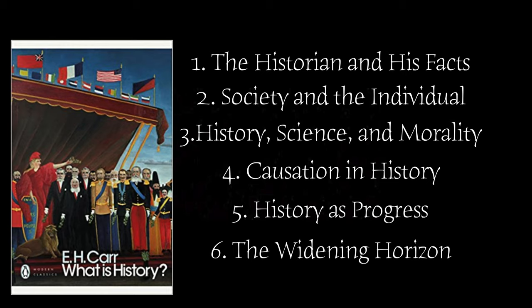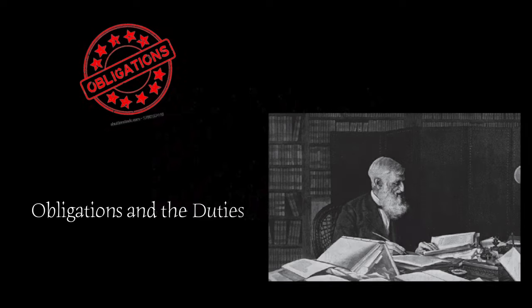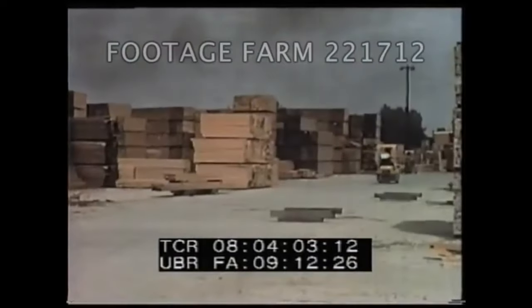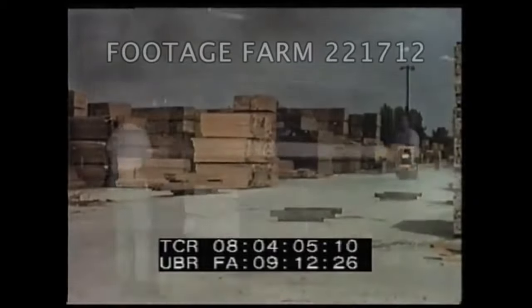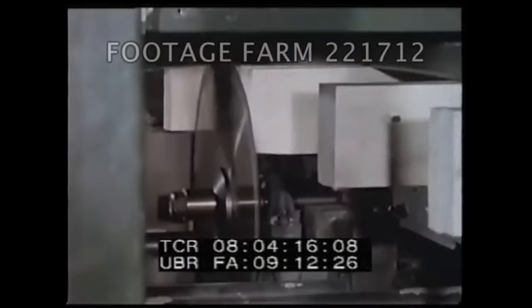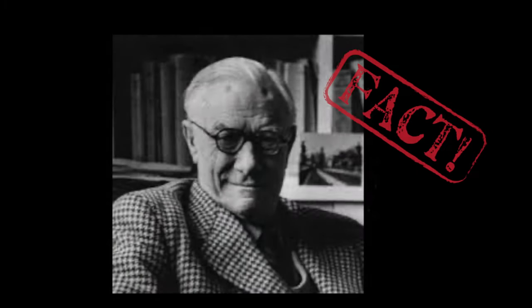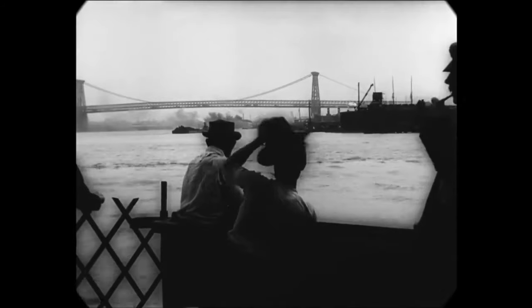The first section, about the historian and his facts, is mainly focused on the obligations and duties of historians. EH Carr talks about how, for a historian, accuracy is a duty, not a virtue. He says that to praise a historian for his accuracy is like praising an architect for using well-seasoned timber or properly mixed concrete in his building, emphasizing that knowing the facts correctly is essential.